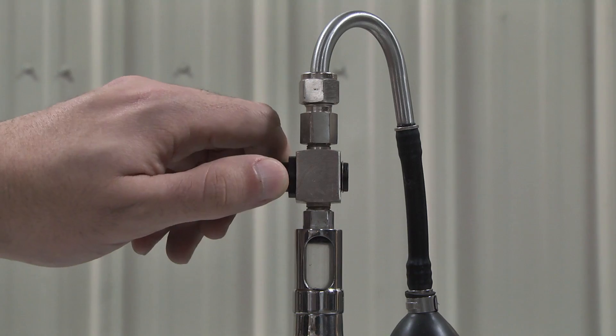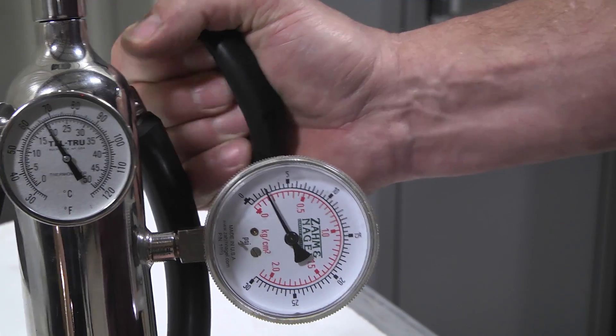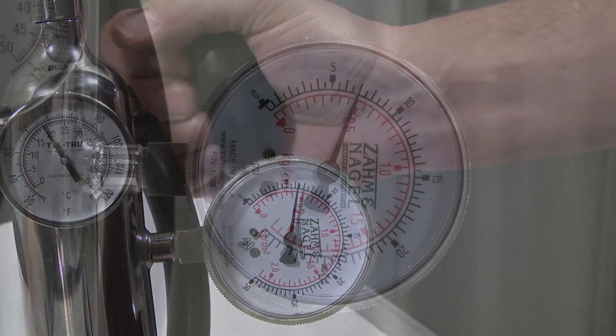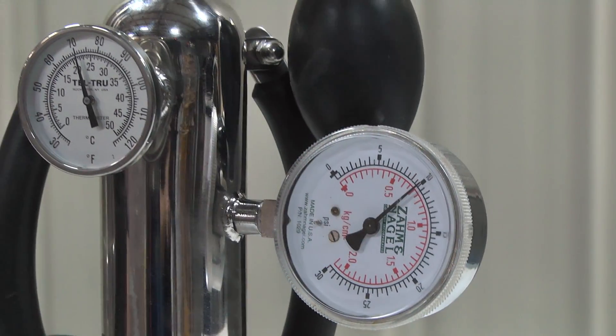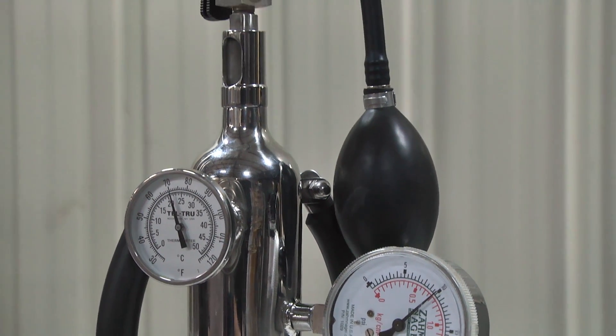Open the top vent valve and establish counter pressure with the aspirator bulb up to the approximate counter pressure plus hydrostatic head pressure existing in the tank to be sampled.